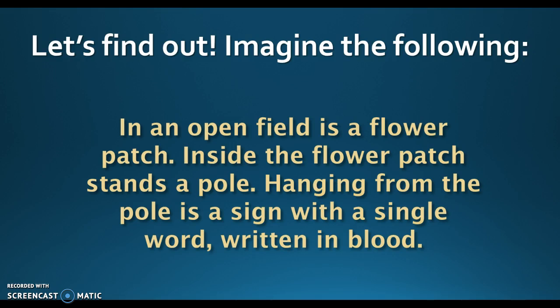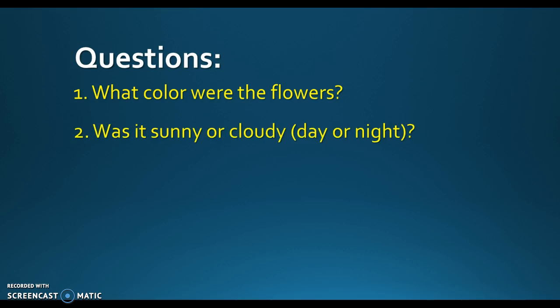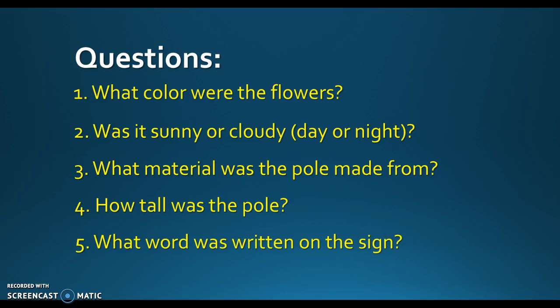In an open field is a flower patch. Inside the flower patch stands a pole. Hanging from the pole is a sign with a single word written in blood. Now open your eyes. What color were the flowers — yellow, blue, pink? Was it sunny or cloudy, day or night? What was the pole made of, and how tall was it? And what word was written on the sign? Not everyone sees a word — some people do, some don't.